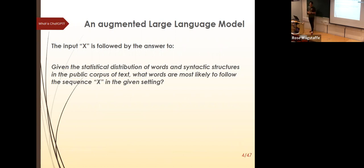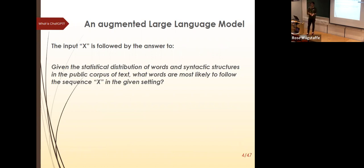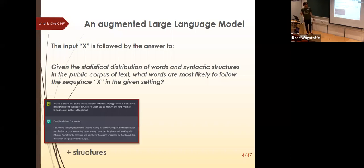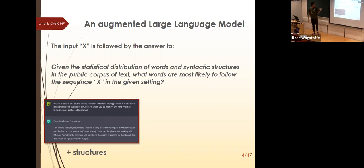How does it work in practice? In simplified terms, if you tell ChatGPT something, it responds based on the statistical distribution of words and syntax in the public corpus: given the sequence X, what words are most likely to follow? But it's not just that — there's added structure. For example, it can write a reference letter with placeholders like 'dear admissions committee, I'm writing to recommend [student name] for the PhD program in mathematics.'